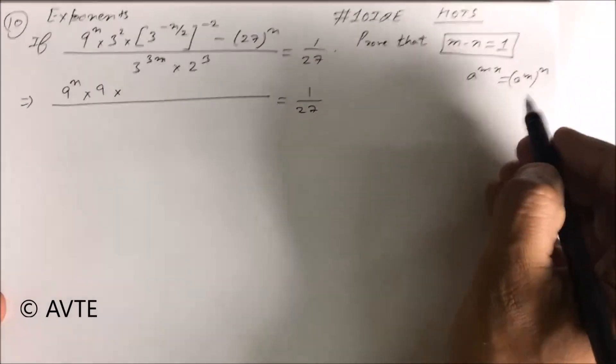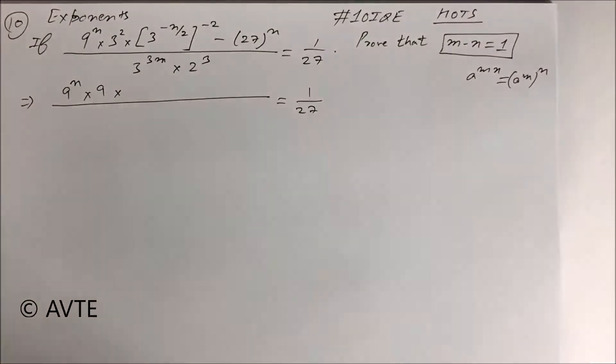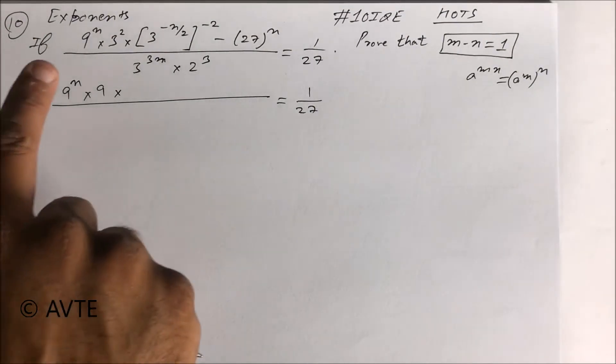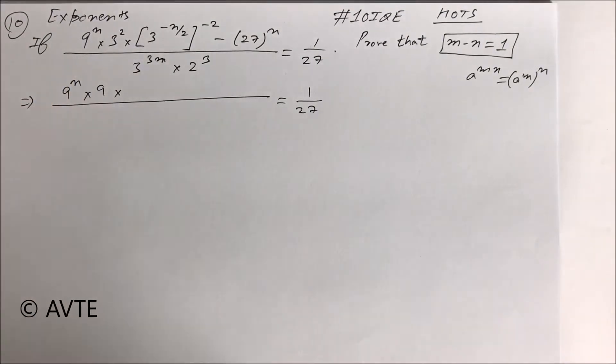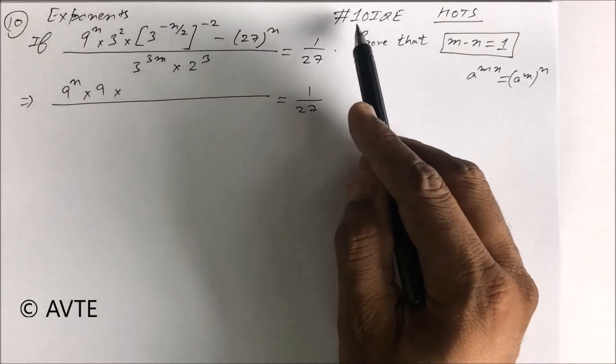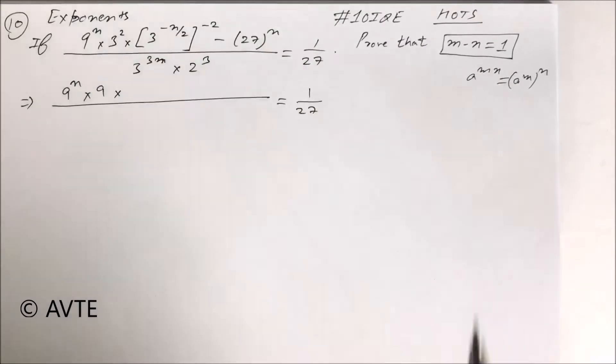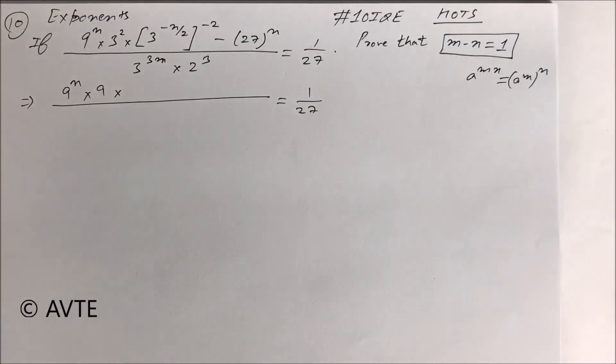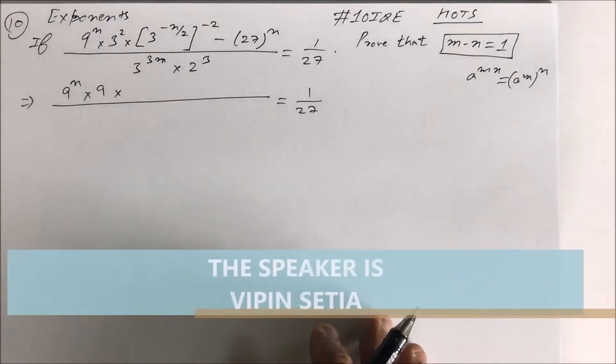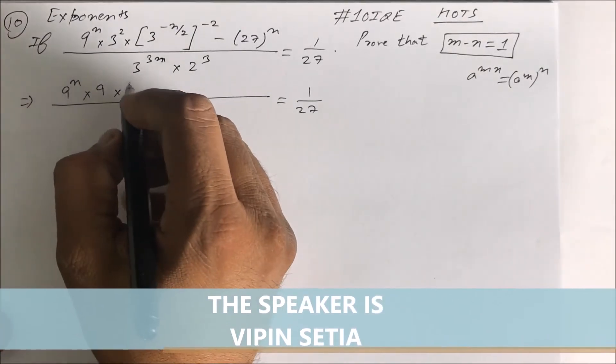We use the formula a raised to power mn is equal to a raised to power m raised to power n. We use this reverse formula. I told you in each question from 1 to 10 in the previous video, we have solved 9 questions in the series hashtag 10 important questions on exponents.